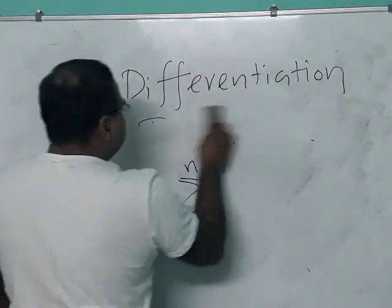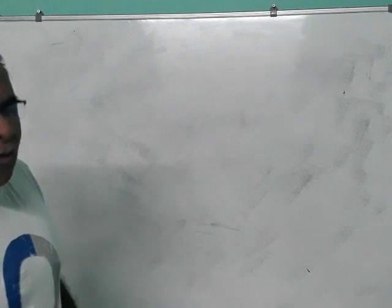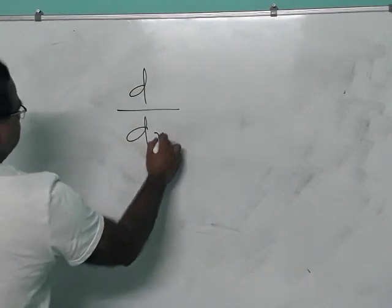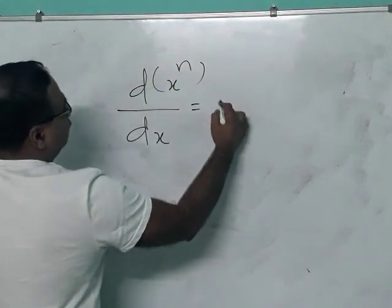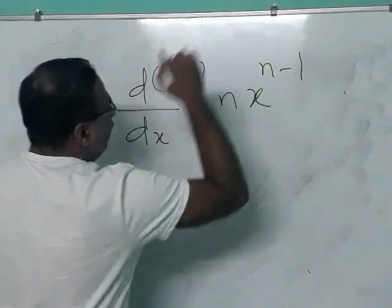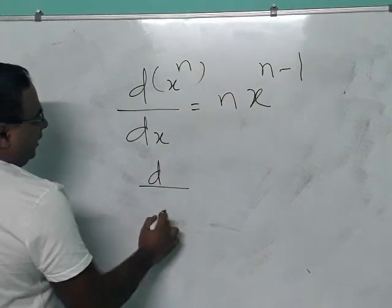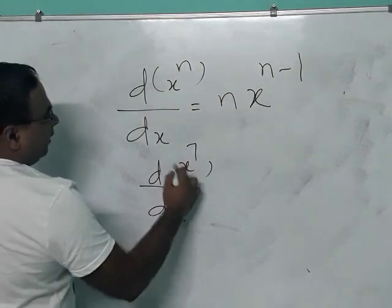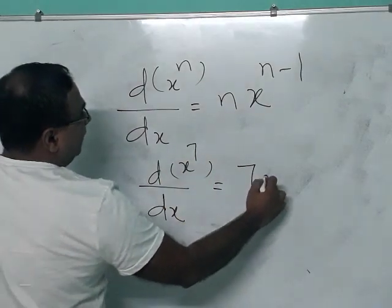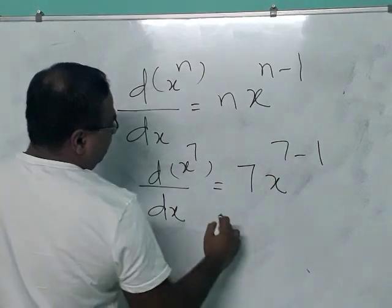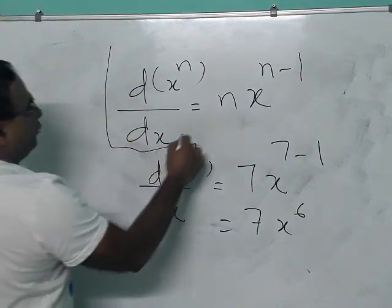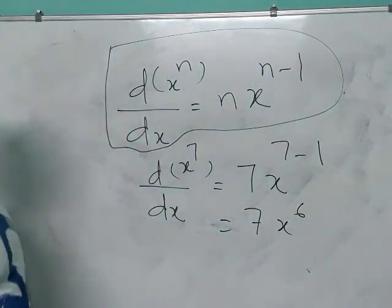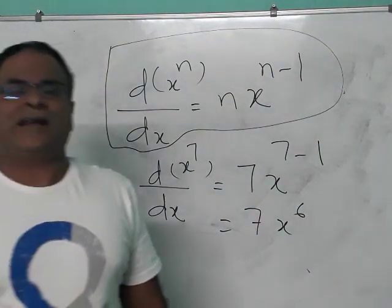You need to understand the fundamental formula in differentiation — what is the derivative. The formula is: d/dx of x raised to n is n times x raised to n minus 1. For example, d/dx of x raised to 7 is 7x raised to 6. This is the formula you need to remember.